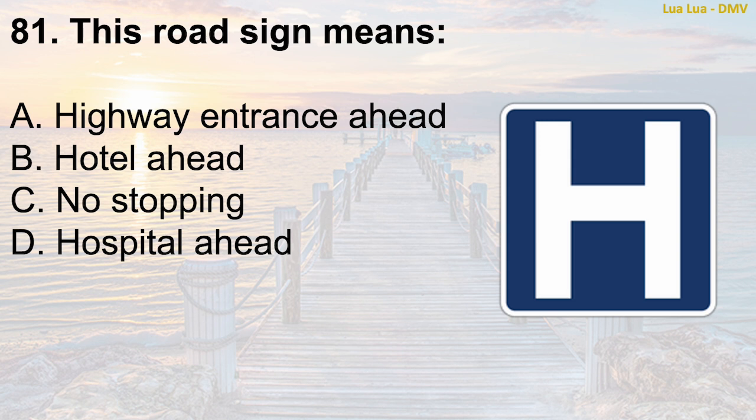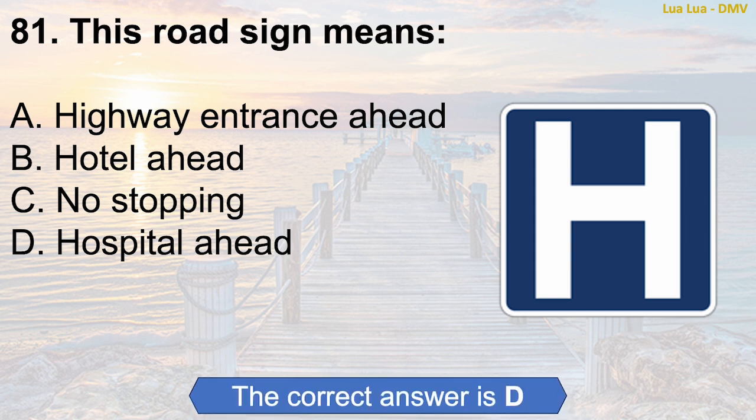Question 81: This road sign means — A. Highway entrance ahead. B. Hotel ahead. C. No stopping. D. Hospital ahead. The correct answer is D: Hospital ahead.